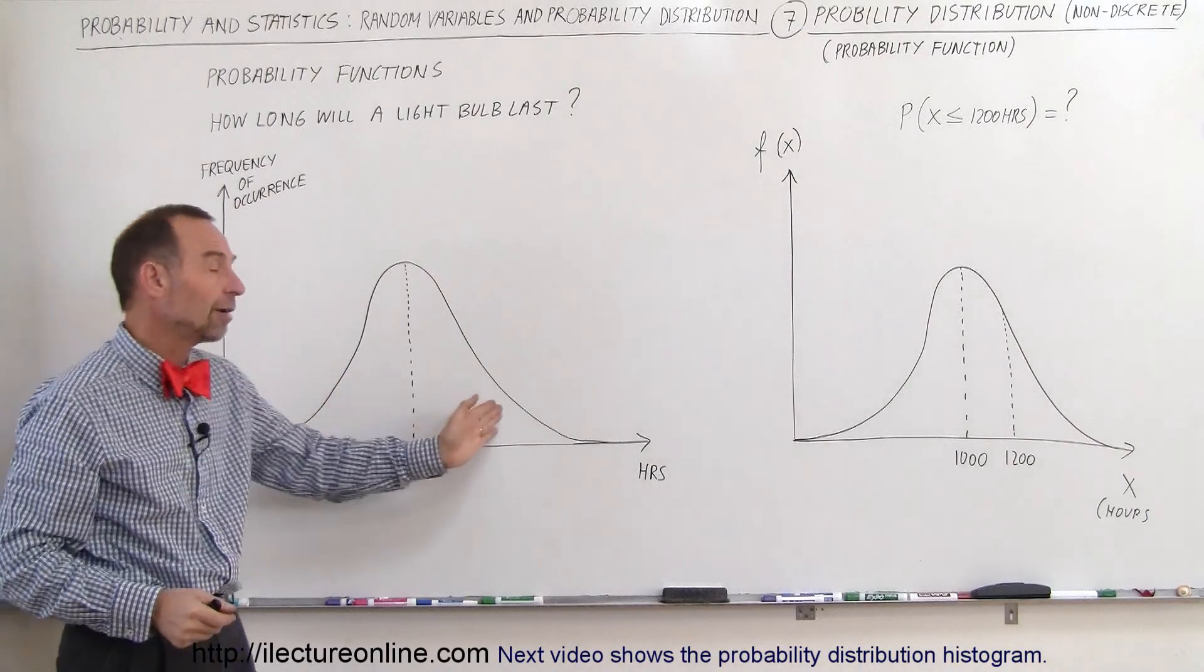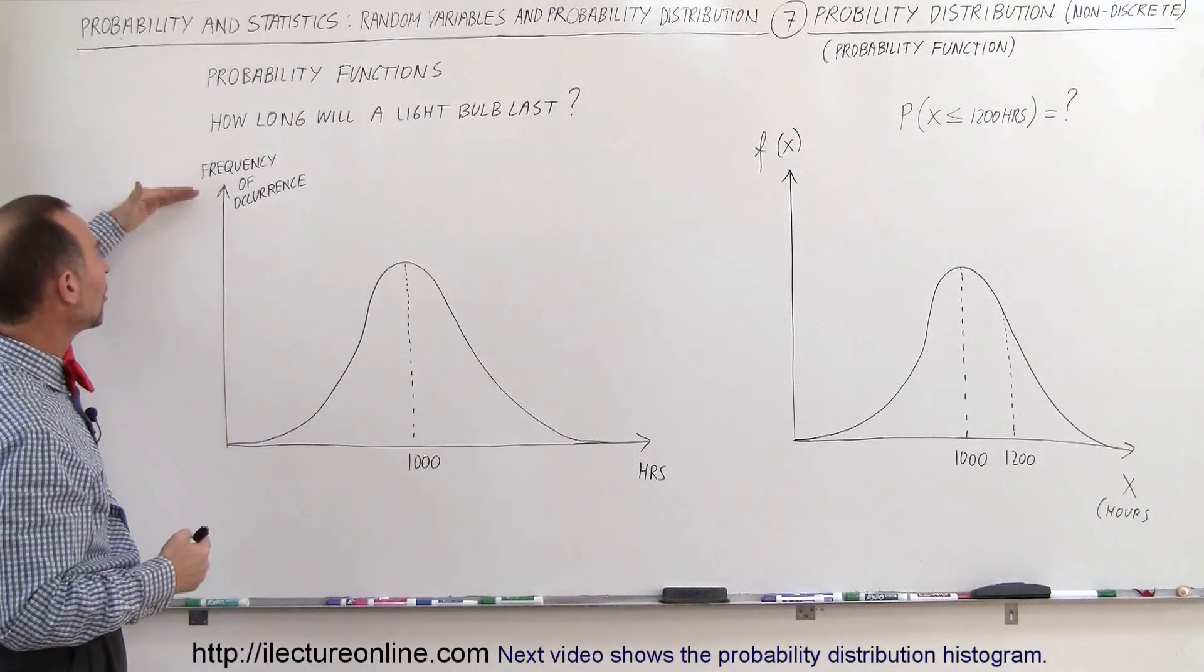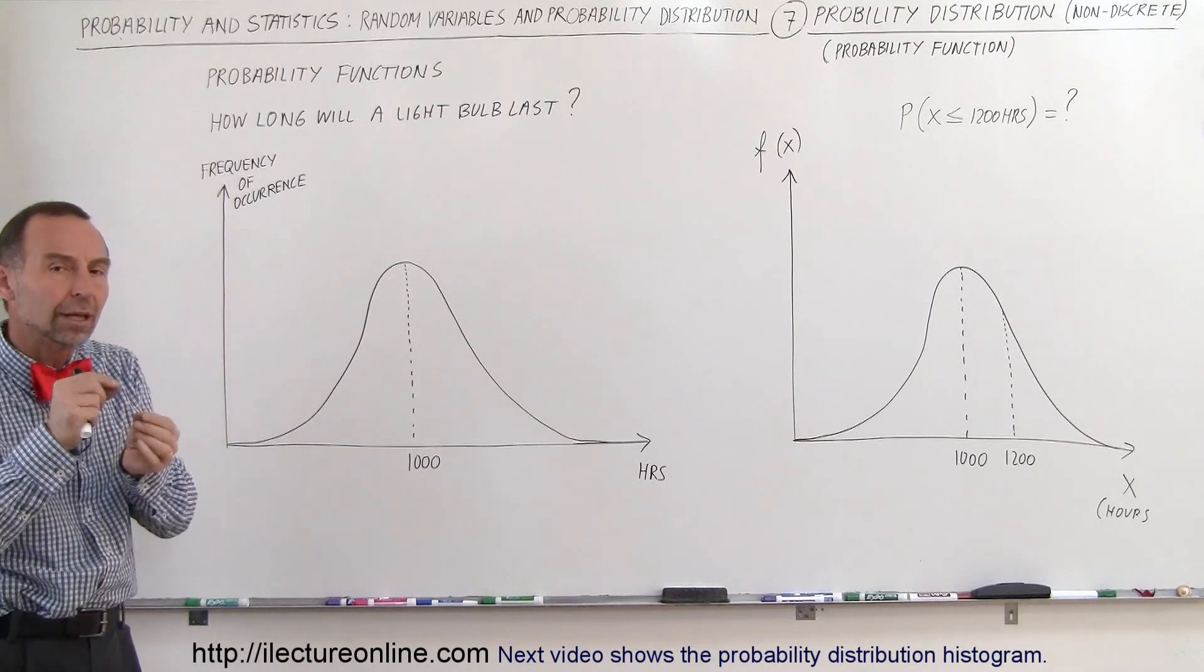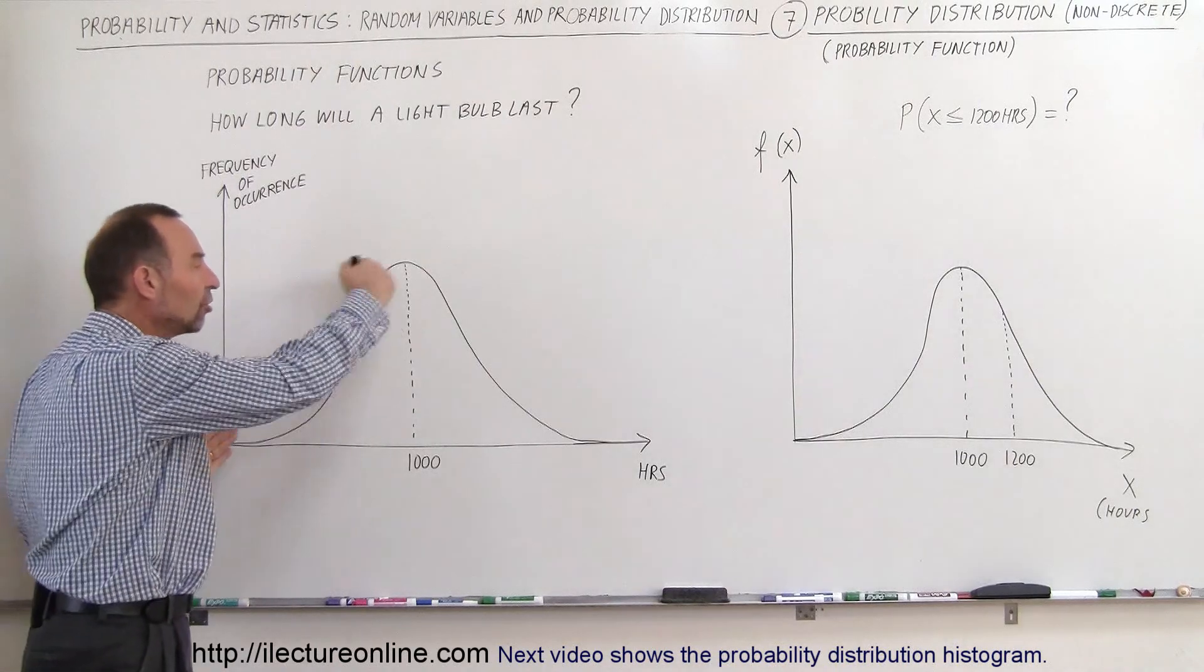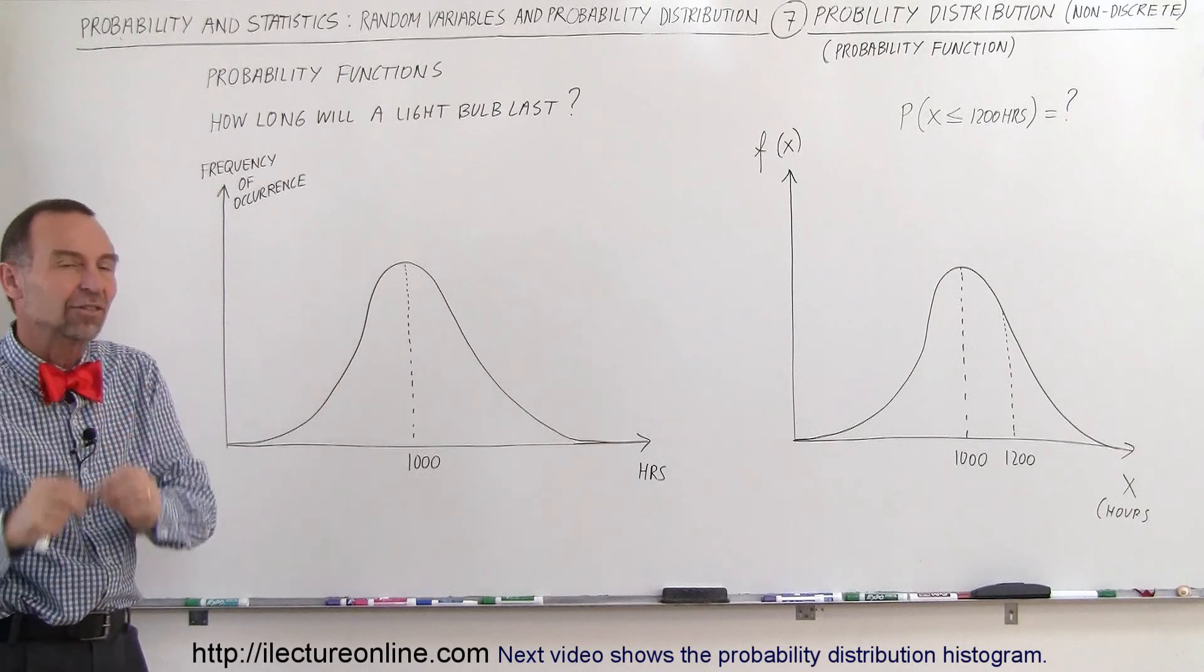Some will have shorter lifespans, some will have longer lifespans before they burn out. So for a great number of light bulbs, we have on the vertical axis the frequency of occurrence, how many will last for about that long, and the thing is it would be a continuous distribution because no two light bulbs would last exactly the same amount of time.